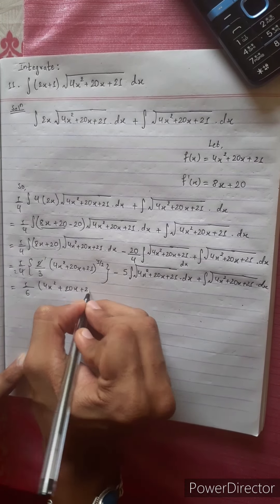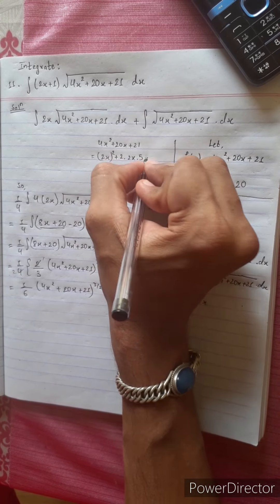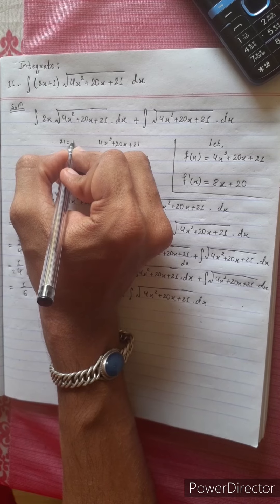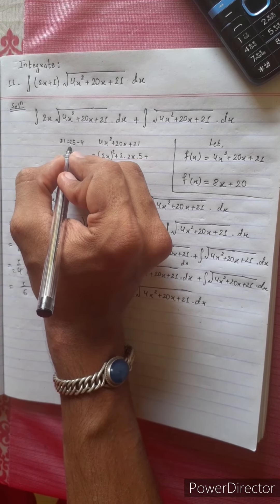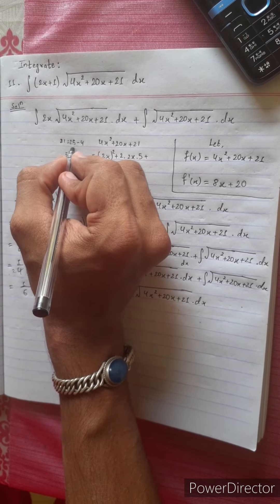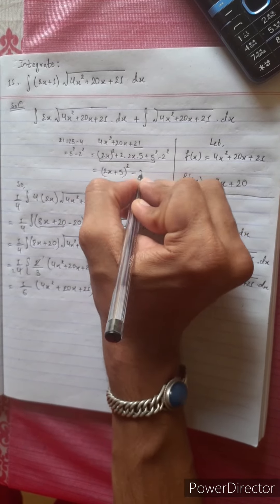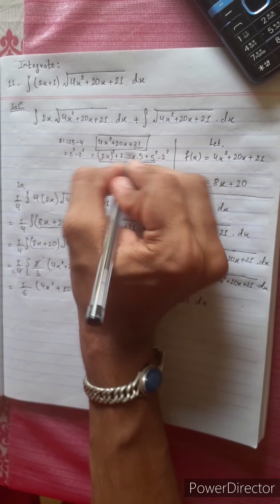Now we complete the square for 4x squared plus 20x plus 21. We write it as (2x)² plus 2 times 2x times 5, plus 21. This becomes (2x + 5)² and we need to handle the constant: we have 25 minus 4, so 4x squared plus 20x plus 21 equals (2x + 5)² minus 4.